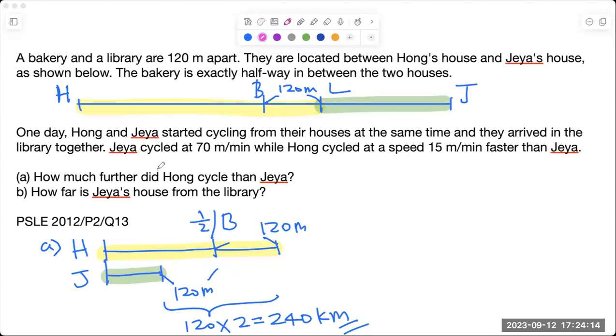One day Hong and Jaya started cycling from their houses towards the library. Jaya cycled 70 meters per minute and Hong has to cycle faster because he has a longer distance to cover. So how much further did Hong cycle than Jaya?